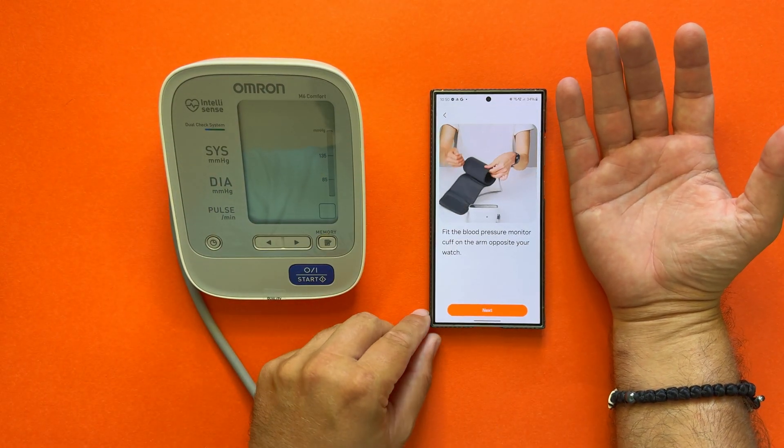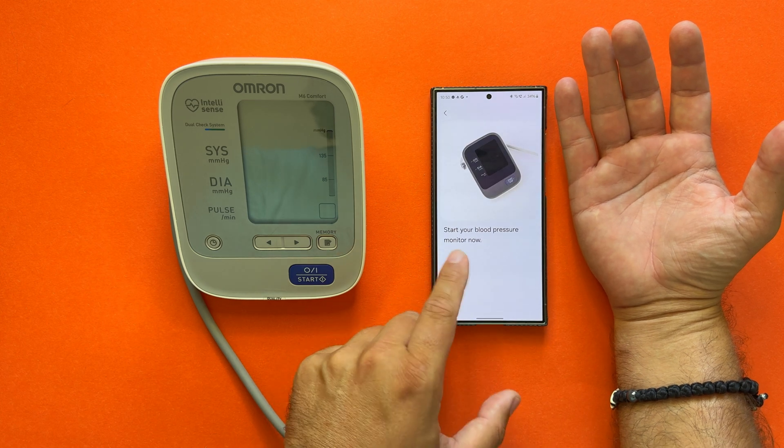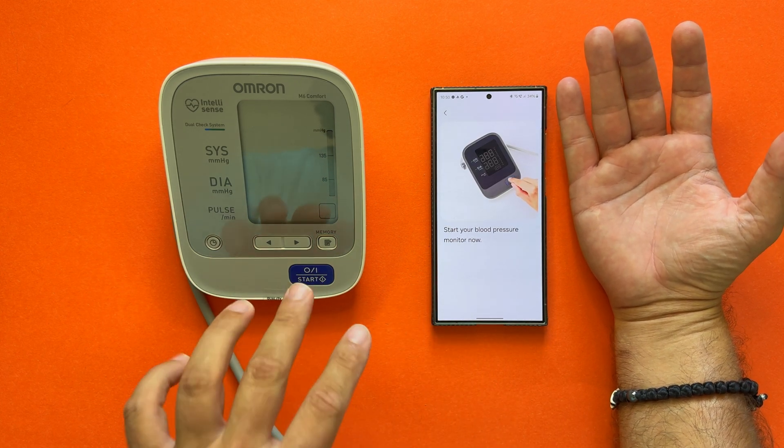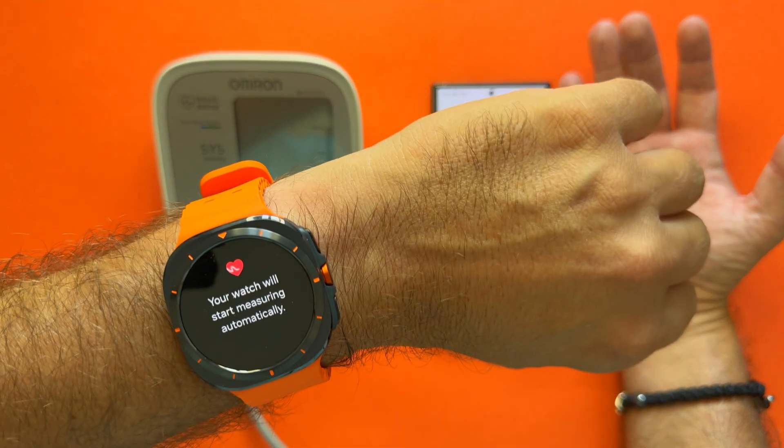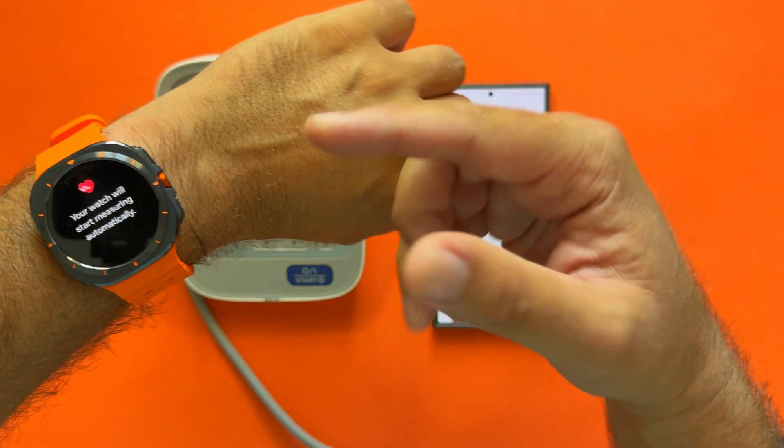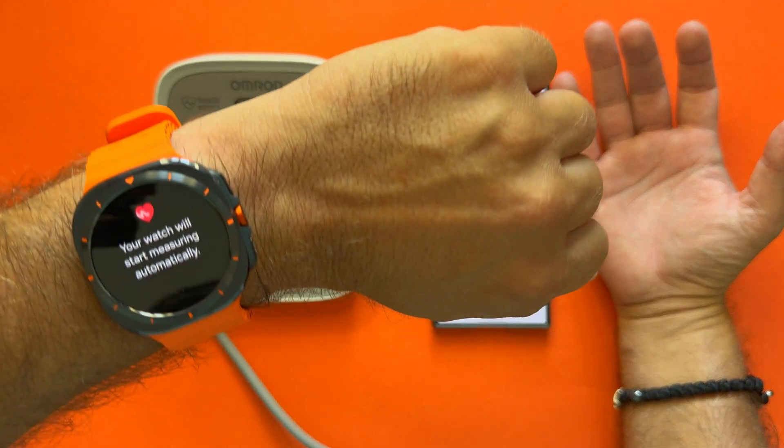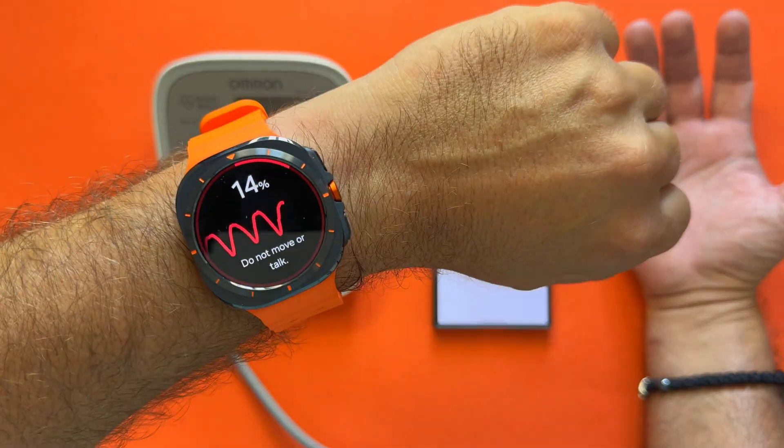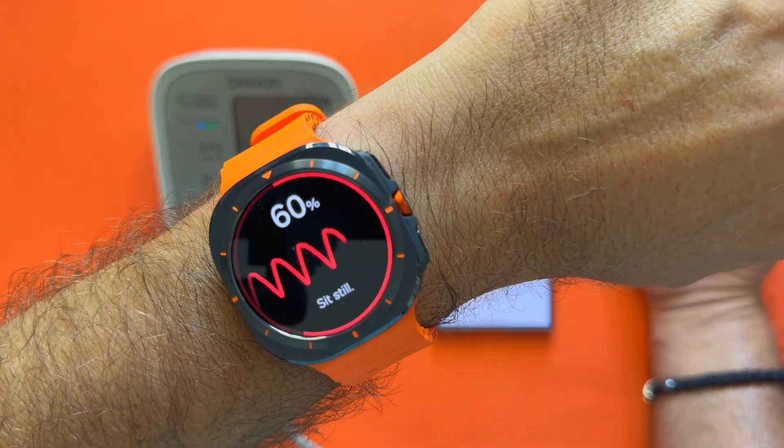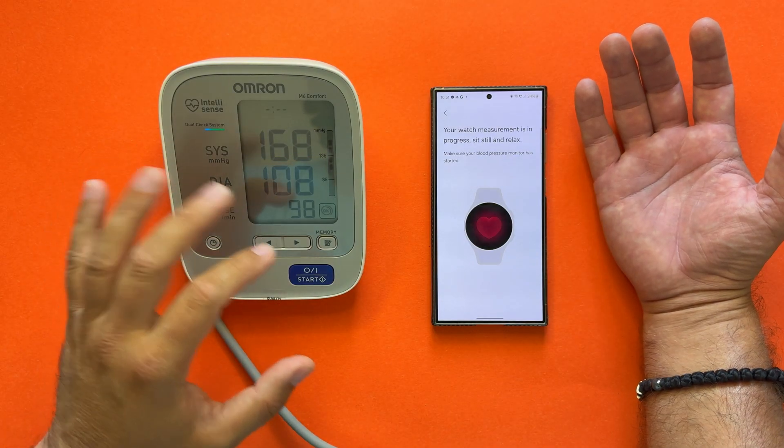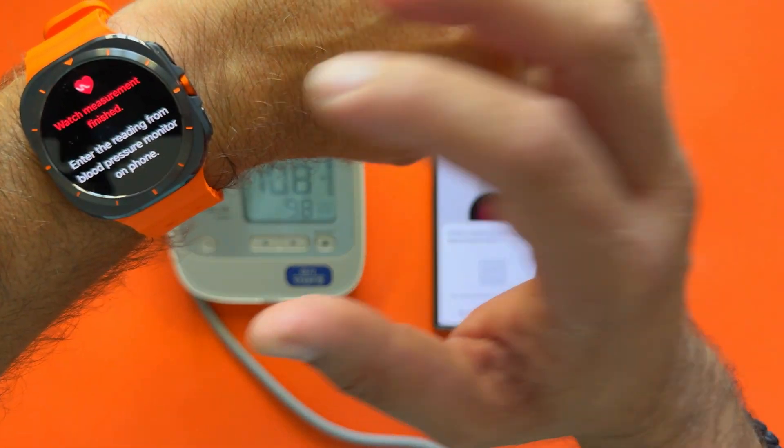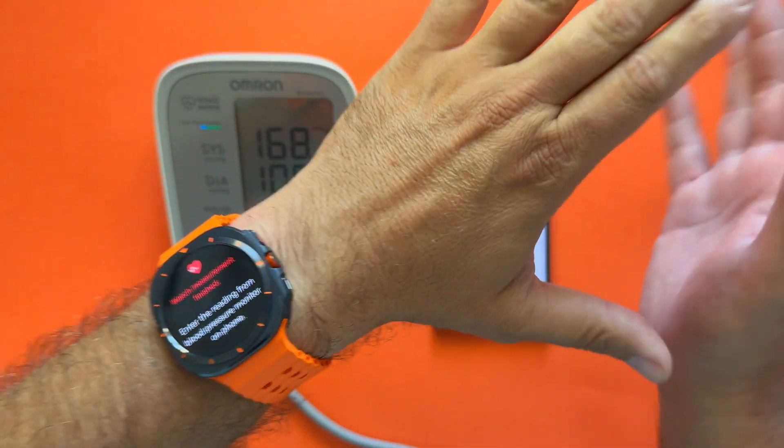I will now link it to my blood pressure monitor. I'm going to put my hand like this, then press Next. Start your blood pressure monitor right now. The moment I started, you're going to see the Galaxy Watch will also start. Your watch will start measuring automatically. 168 over 108. I know this is very very high, but again, I took coffees in the morning.